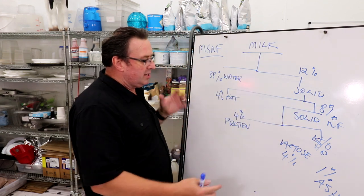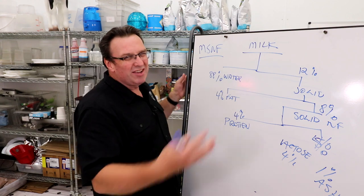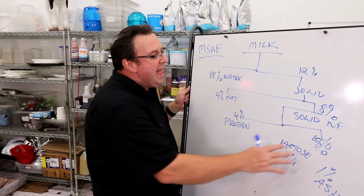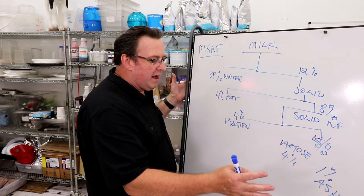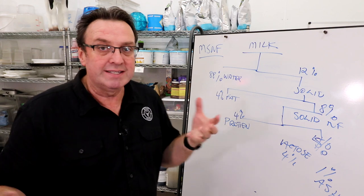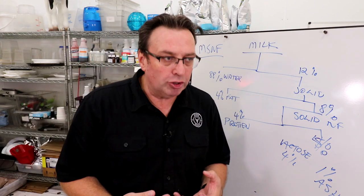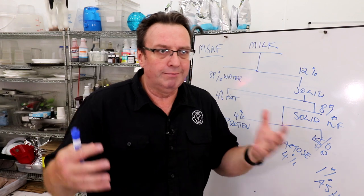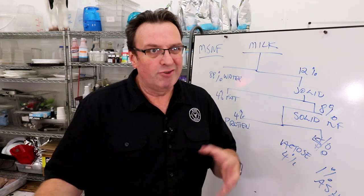Out of that eight percent, you've got about three and a half of casein protein and whey protein, and the other four and a half is four percent lactose, which is the cow's natural sugar. We just did a video on that not long ago about sugar-free products aren't really sugar-free because lactose is sugar.